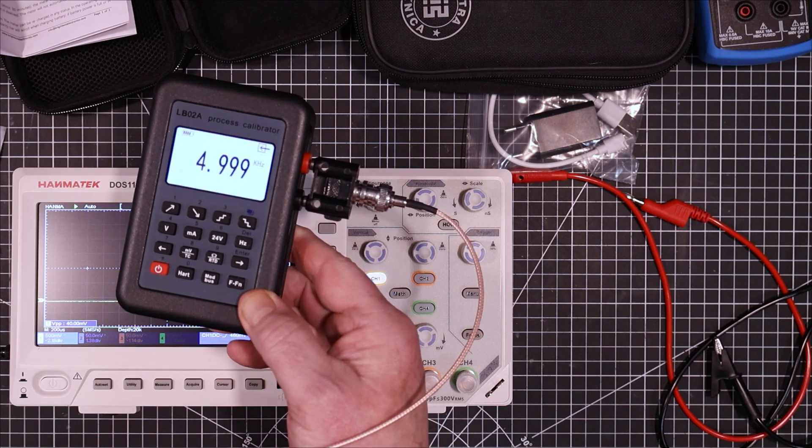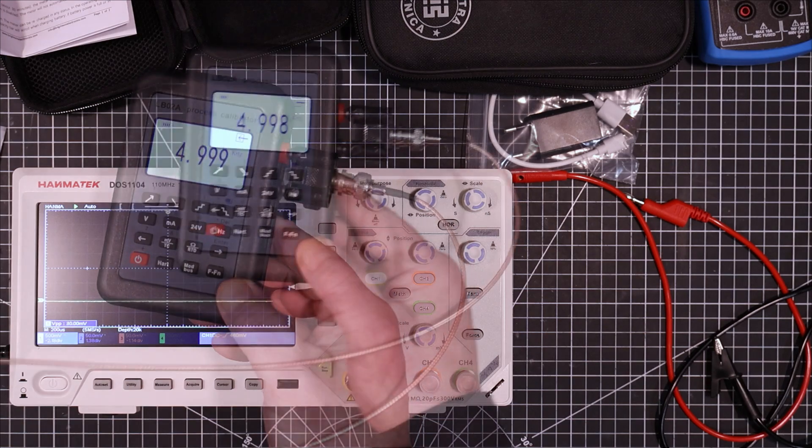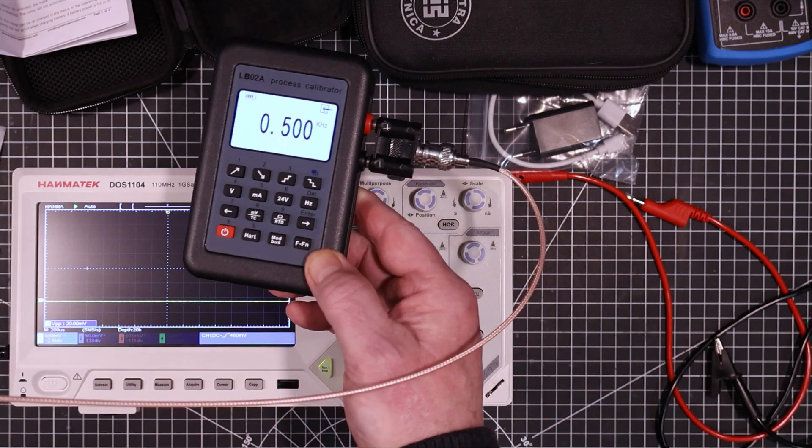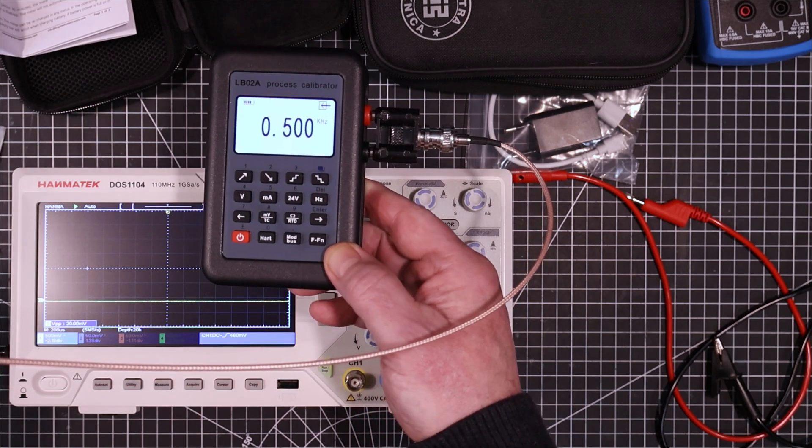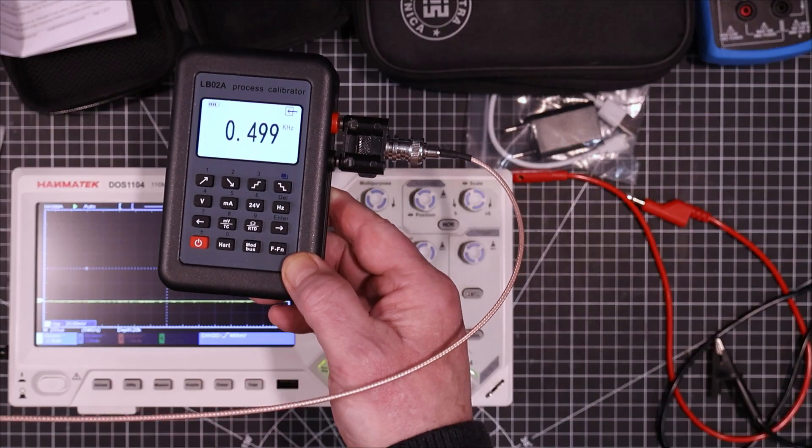And putting in 5 kilohertz. Let's try 500 hertz. Right on. Okay. This signal oscillator here by the way is driven from a GPSDO. So it is pretty accurate.